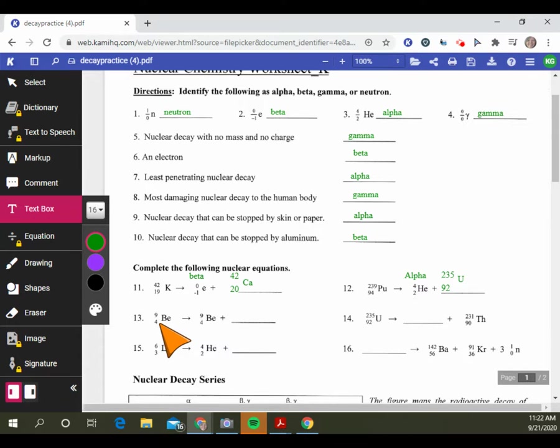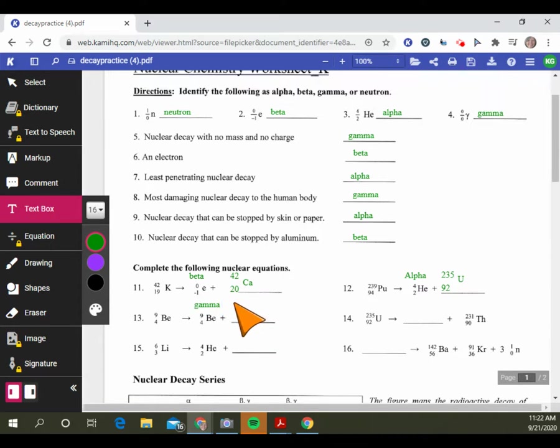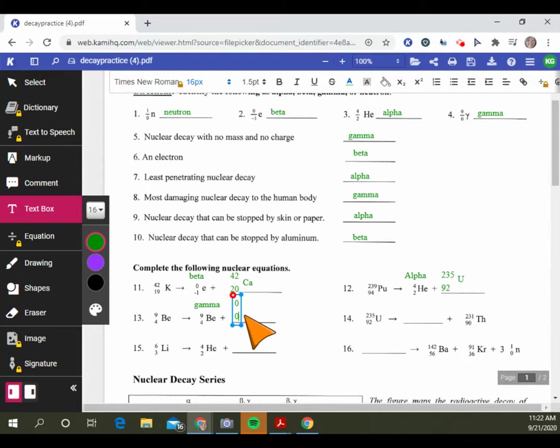Looking at number 13, we have beryllium-9 and we still have beryllium-9. So what kind of radiation makes no change to the nucleus? We can label that gamma radiation. I don't have a Greek alphabet to put on here, so we're just going to use a capital Y. But it's 0, 0. I know it's inappropriate to put Y here because that's the element yttrium, but for our purposes I will understand what you are doing.